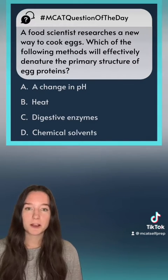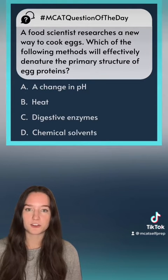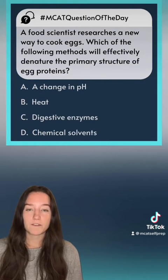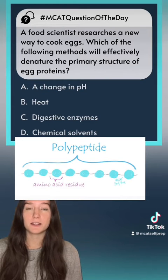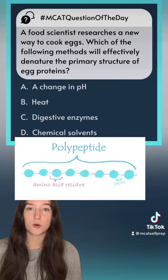So let's remind ourselves what the four levels of protein structure are. First, we have the primary structure, which is represented by a straight chain because it's going to be composed of just the individual peptide bonds that are holding individual amino acids together.